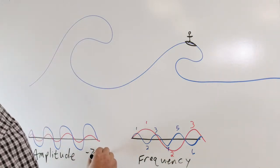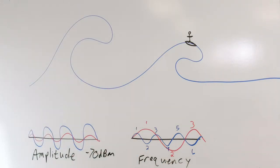For example, if we say we have a signal strength of negative 70 dBm at 728 megahertz, the amplitude is the negative 70 dBm and the frequency is 728 megahertz.